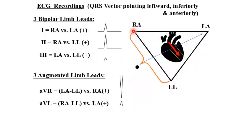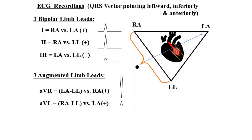The axis of the AVL lead runs from the center between the two negative electrodes into the left arm. As we can see, the component parallel to the cardiac axis is very short, so the deflection is small. But the direction is toward the positive electrode, so it is a positive deflection.